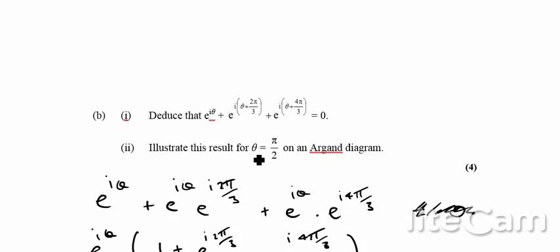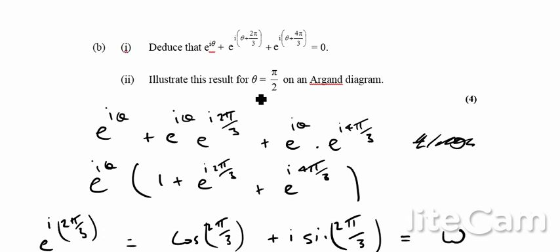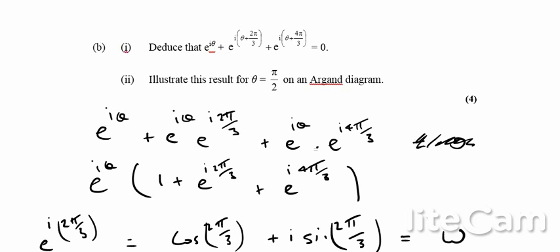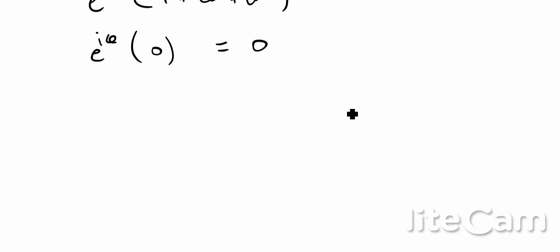Lastly, it says: illustrate this result for θ = π/2 on an Argand diagram. We've basically got three different roots here which we can show on the diagram.